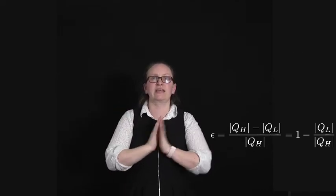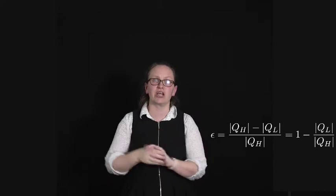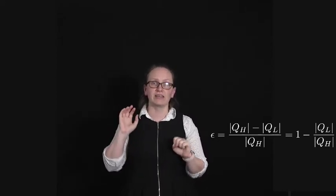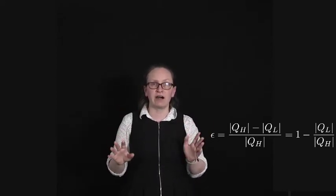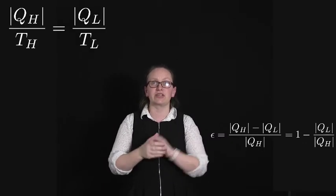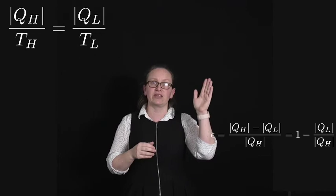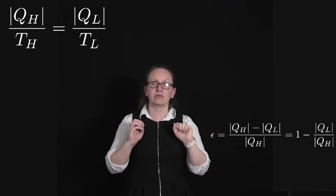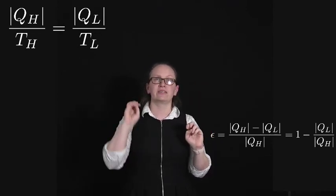Now we can actually get this into terms of the temperature of that hot reservoir and the colder reservoir, because we looked at entropy and came up with an expression that the absolute value of QH divided by TH was equal to the absolute value of QL divided by TL.